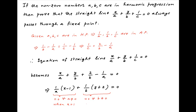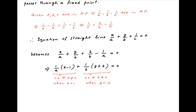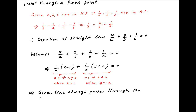It therefore follows that the left-hand side equals 0 for all non-zero values of a and b when x equals 1 and y equals minus 2, which implies that the given line always passes through the fixed point (1, -2). This is the required result.